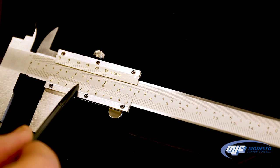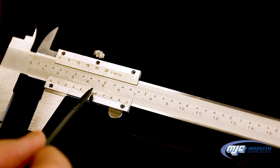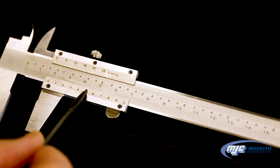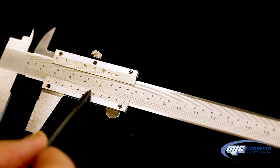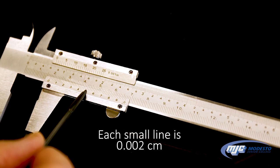But as we go over, we get to the five, it starts getting closer. And then I'd probably say that, and each of these small lines, by the way, is 0.002 centimeters.